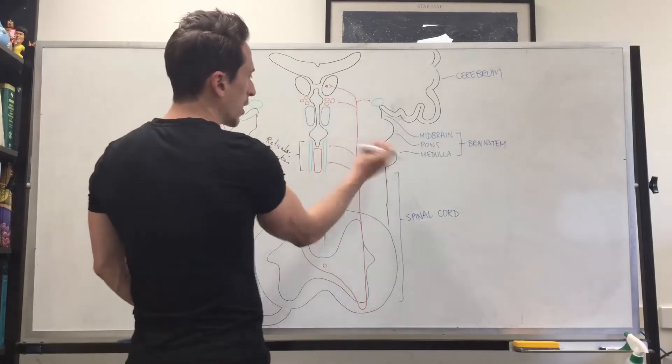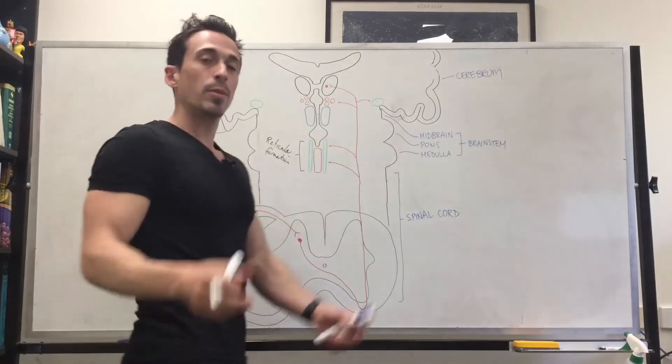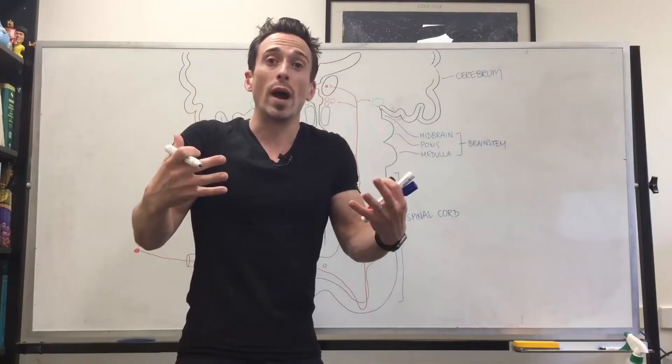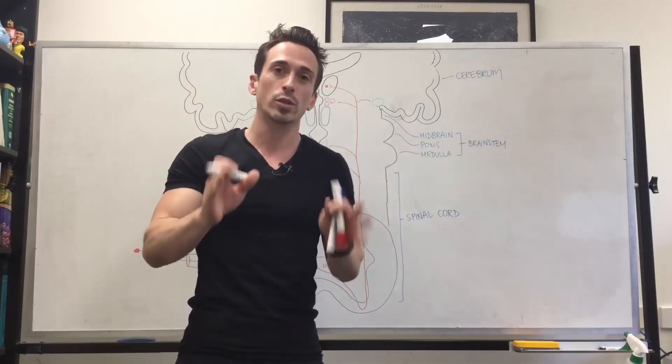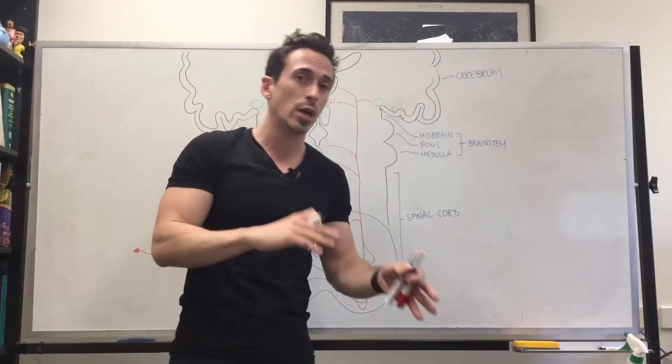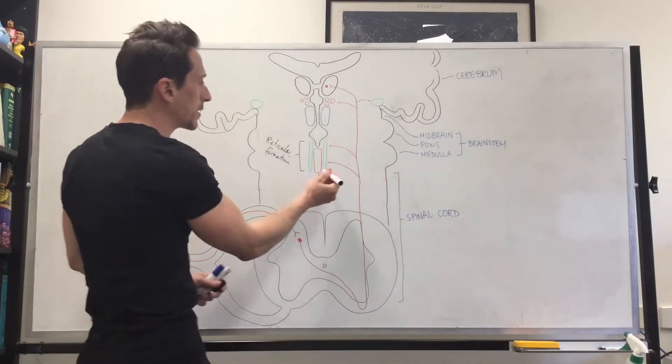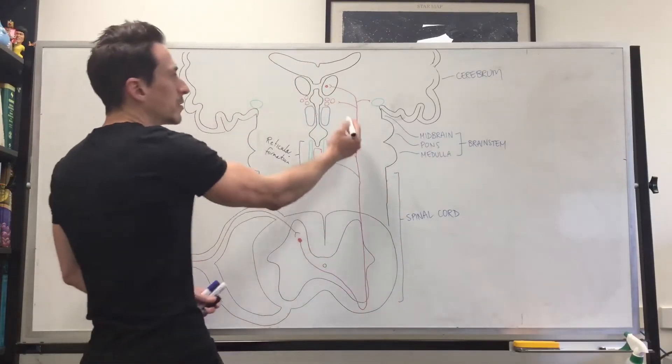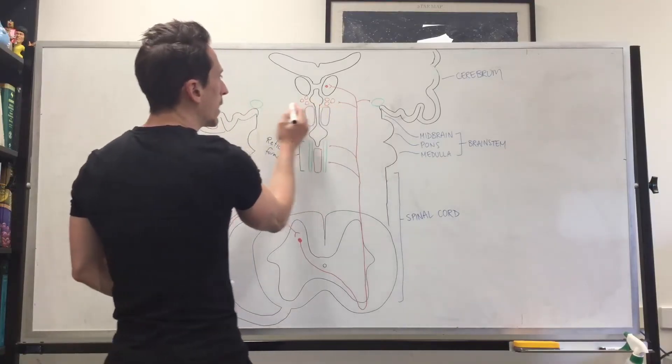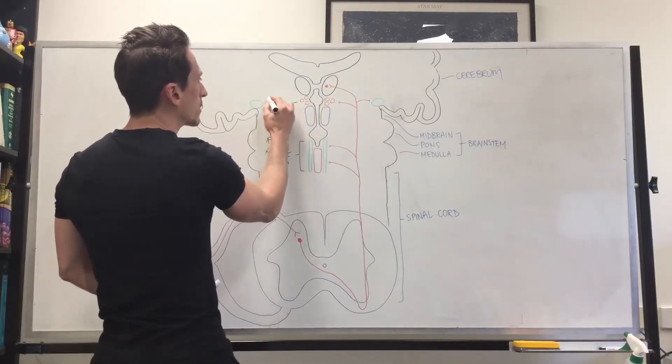Why do we want a painful stimuli synapsing and talking to this area? Because what happens when we're in pain? We're awake. We need to be aware of exactly what's going on. We don't want to be drowsy. We don't want to be unconscious. We want to be consciously aware so we can avoid that pain. So it stimulates the reticular formation. As it continues to go up, it's also going to talk to this area here. This is called the hypothalamus.